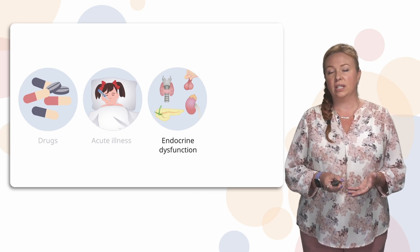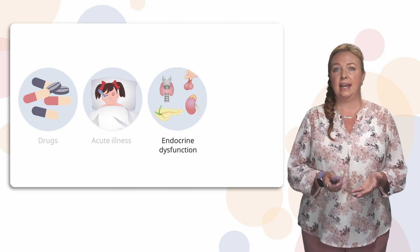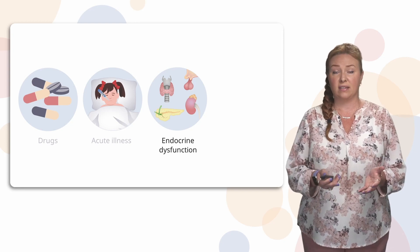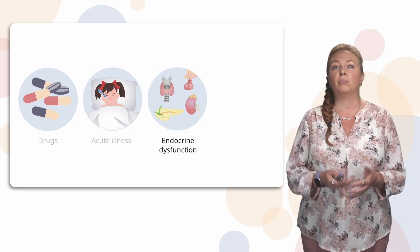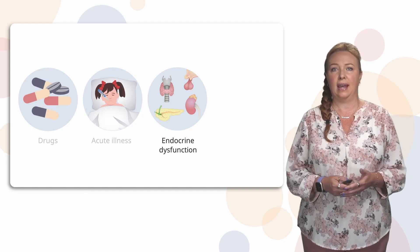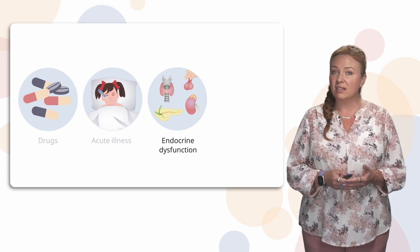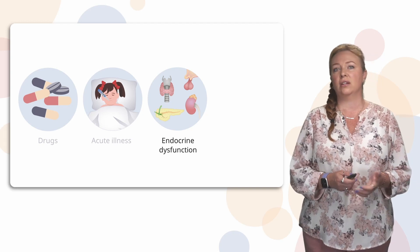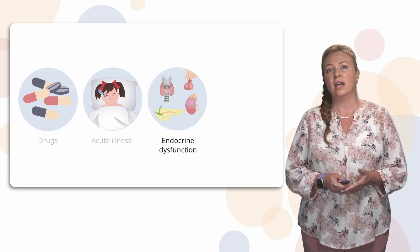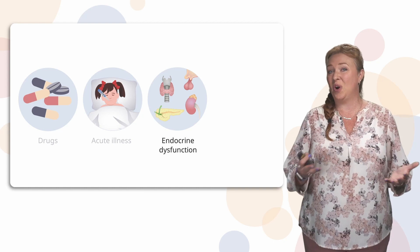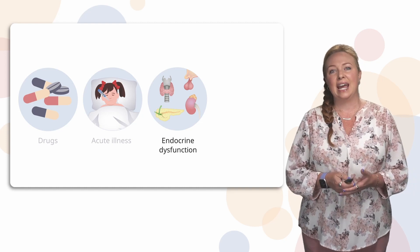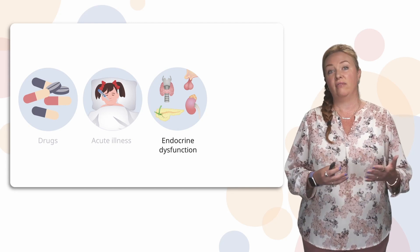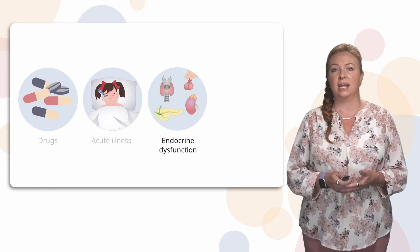Endocrine dysfunction can also precipitate DKA. Sometimes it's a new diagnosis of diabetes, so the diabetes is not being controlled at all and it presents with DKA. Noncompliance with insulin for people who have an established diagnosis is another cause — sometimes teenagers don't want to take their insulin and will let that blood sugar get higher and higher until they start having difficulty and present with DKA.